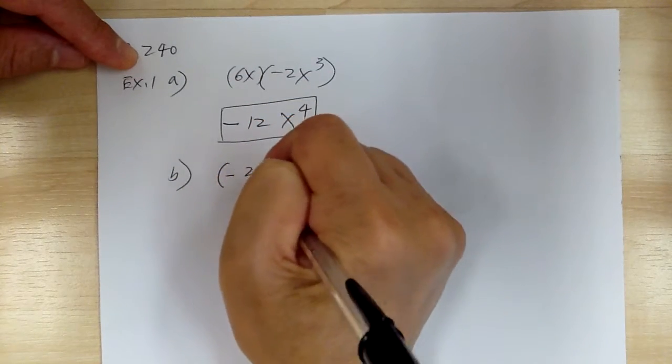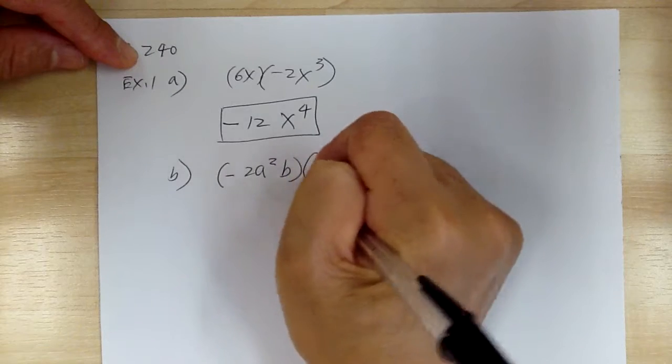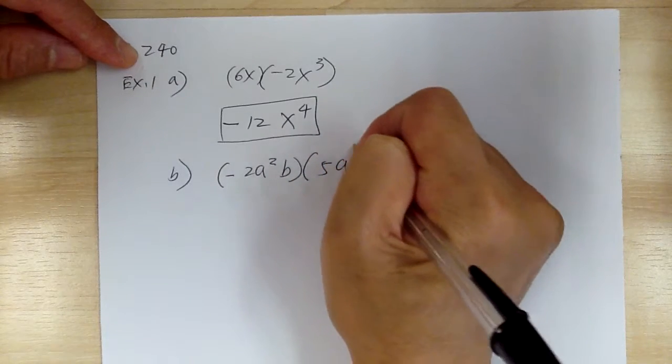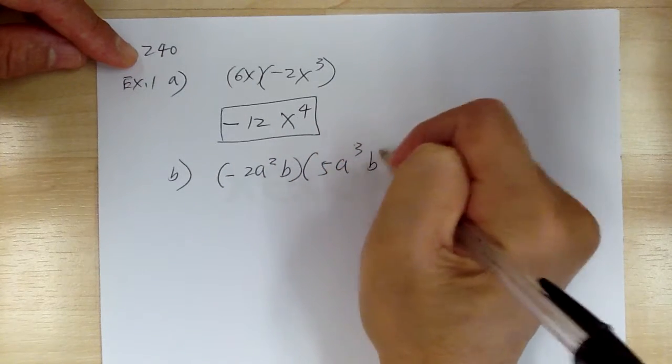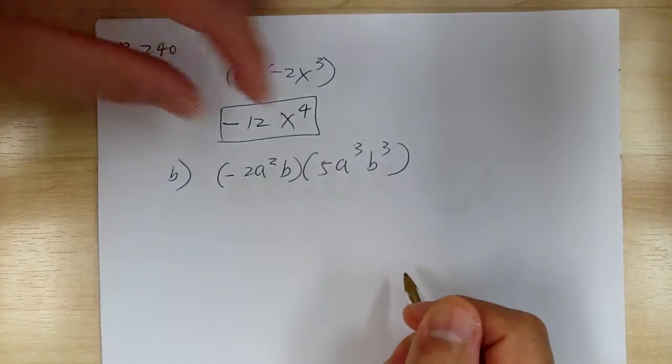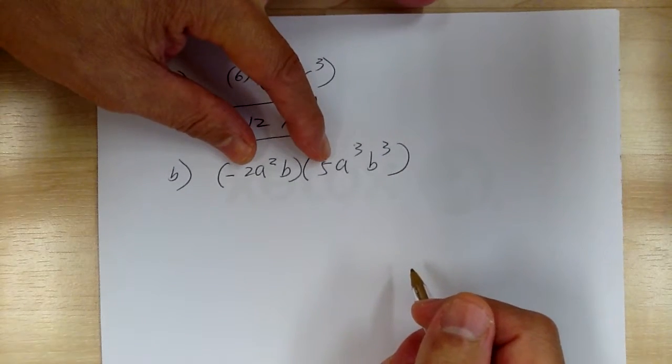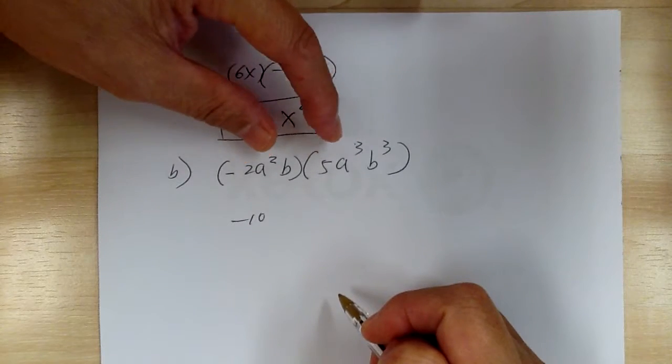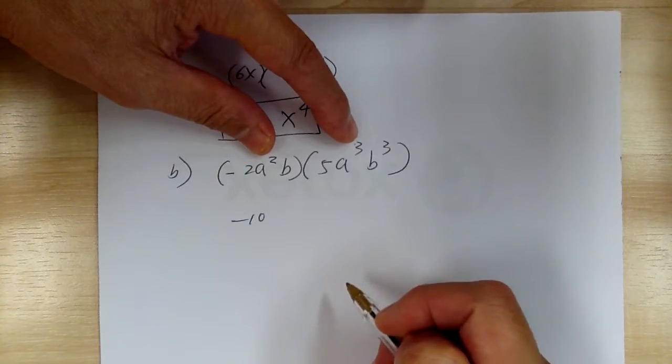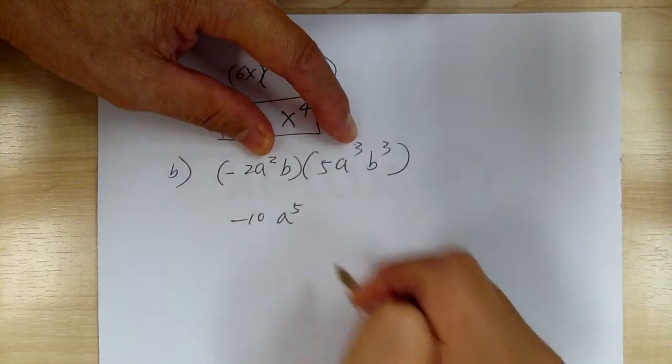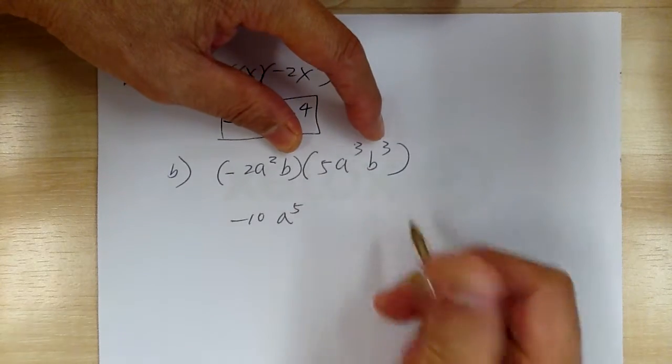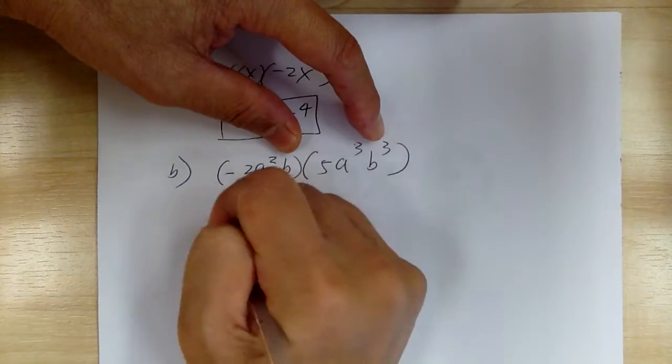You have negative 2a squared b times 5a to the 3 b to the 3. So again, take care of the number first. So negative 2 times 5 is negative 10. Then you go down the alphabet. So a squared times a 3 gives a to the 5. Then b times b to the 3 gives b to the 4 and that's it.